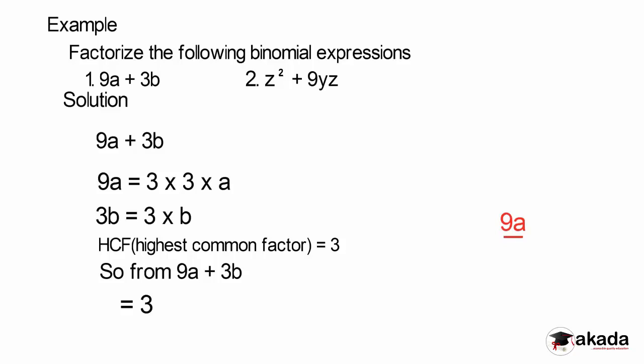I have to divide 9a by 3. So I have 9a over 3, which gives 3a. That would be our first term in the brackets. Then I have 3b divided by 3, which gives b. So my answer is 3 into brackets 3a plus b. If you open this up, you have 9a plus 3b. That is factorizing the binomial expression.